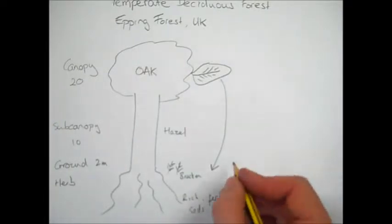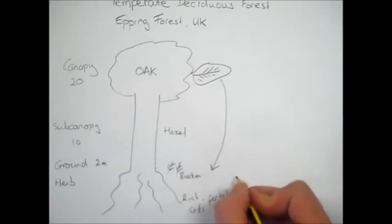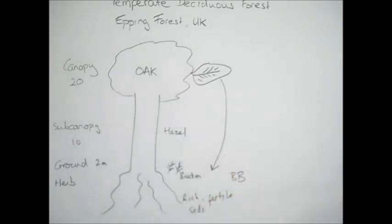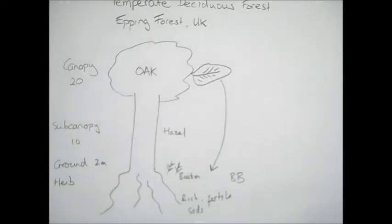One of the most interesting adaptations in temperate deciduous woodland is the bluebell. The bluebell is adapted so that it blooms much earlier than the rest of the vegetation. This means it flowers before the canopy returns, allowing it to photosynthesize before the light is blocked out by the leaves of the oak trees.